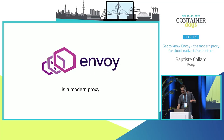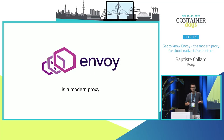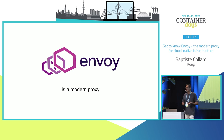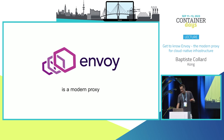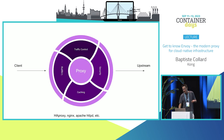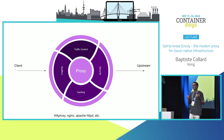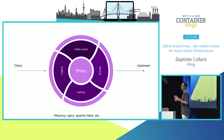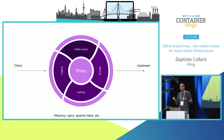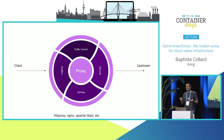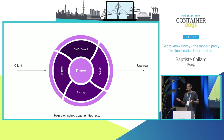What is Envoy? It's a good question. As you might know, it's a modern proxy. A proxy is basically a piece of software helping you route traffic between a downstream client and an upstream service. I'm sure most of you have already used Nginx, HAProxy, or Apache back in the day. The main capabilities you would find in such proxies are traffic control, security, access logging, and most likely caching.